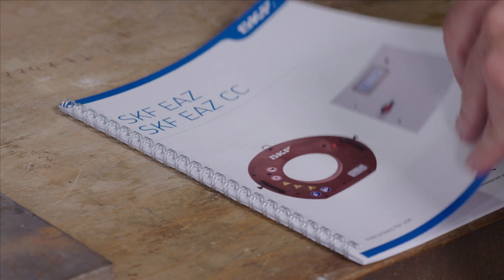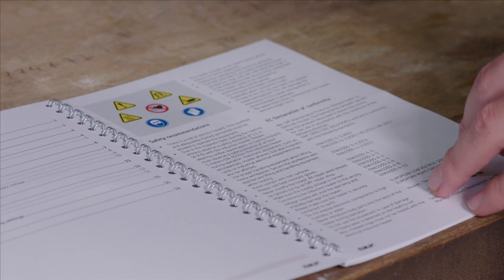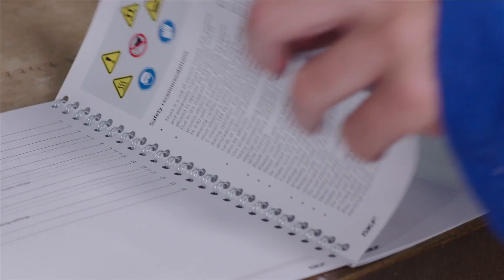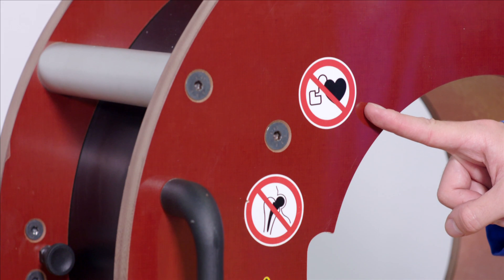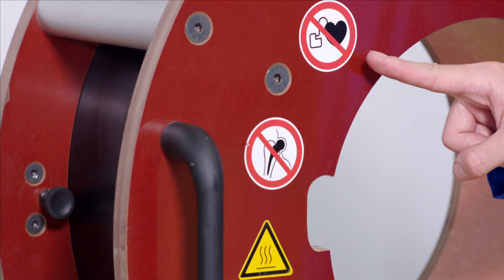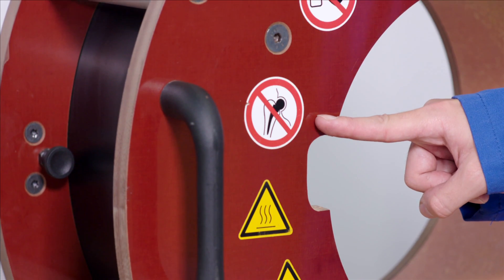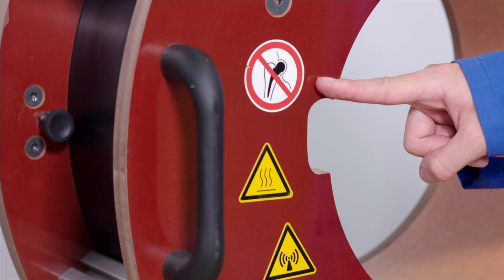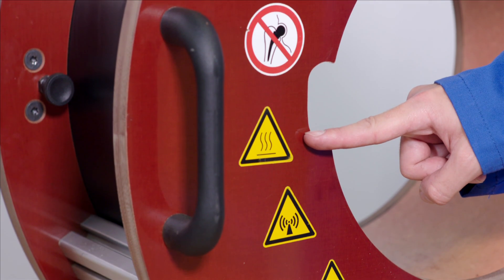Before using the EAZ heater, spend some time reading the instruction manual provided with the heater. And be aware that people wearing pacemakers or implants must keep at least 5 meters from the induction heater during operation.